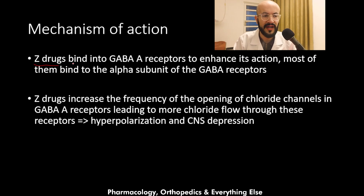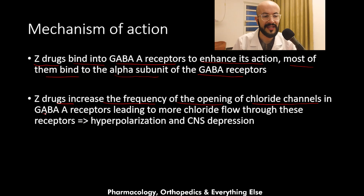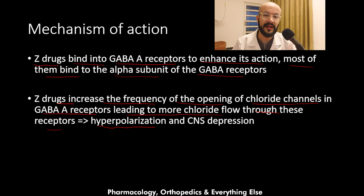The Z-drugs bind to the GABA receptors to enhance their actions, and most of them bind to the alpha subunit. The Z-drugs work by increasing the frequency of opening of the chloride channels in the GABA receptors, leading to more chloride flow. This causes hyperpolarization and inhibition of nerve transmission, leading to CNS depression, which ultimately produces the hypnotic effects.